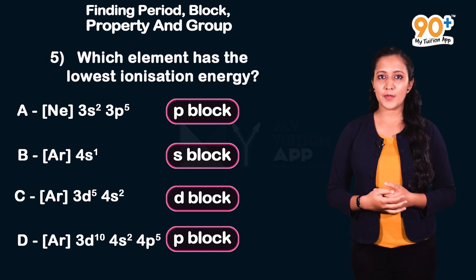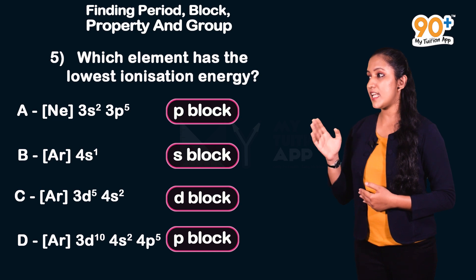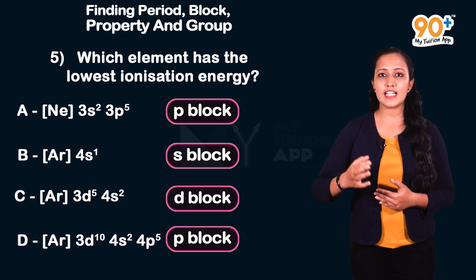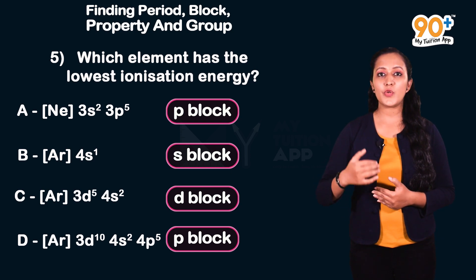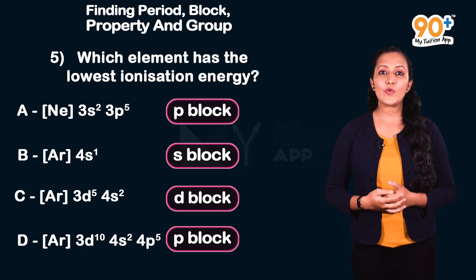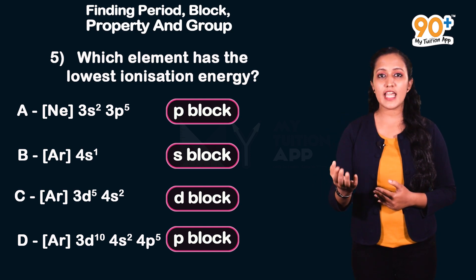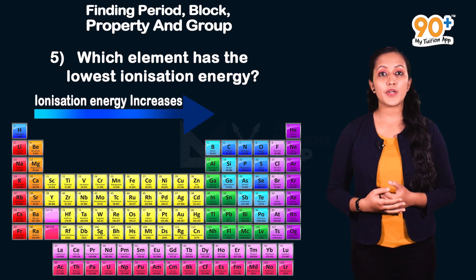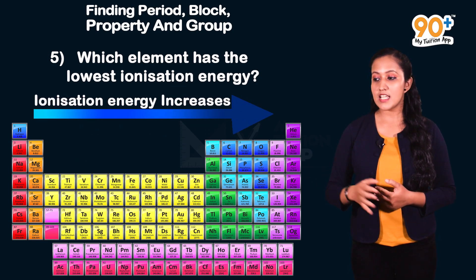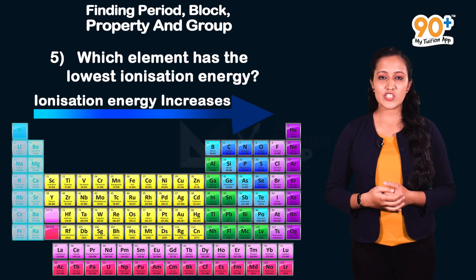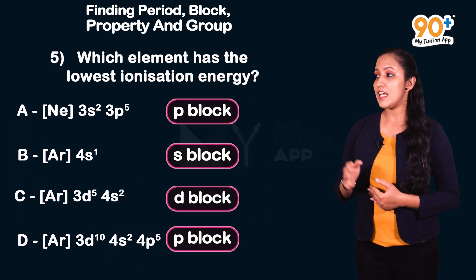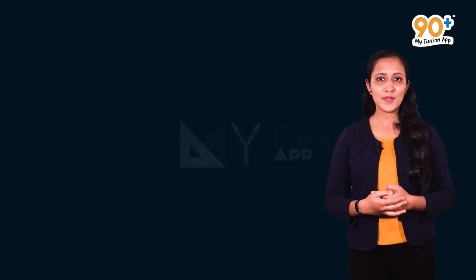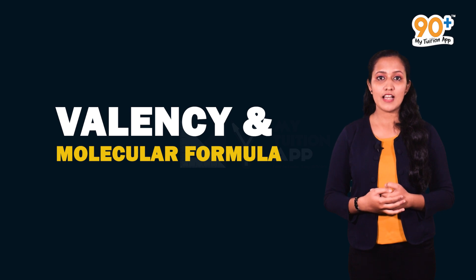Fifth question: Which element has the lowest ionization energy? Ionization energy is the energy needed to remove the most loosely bound electron from the outermost shell. In the periodic table, ionization energy increases from left to right within a period, so s-block elements have the lowest ionization energy. Element B is the s-block element, so the answer is element B.